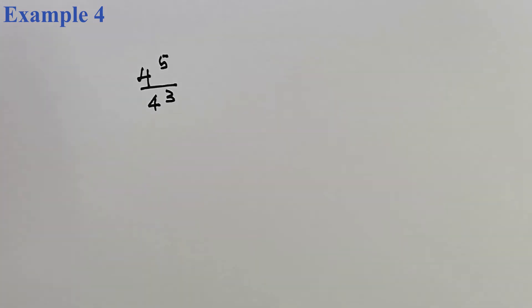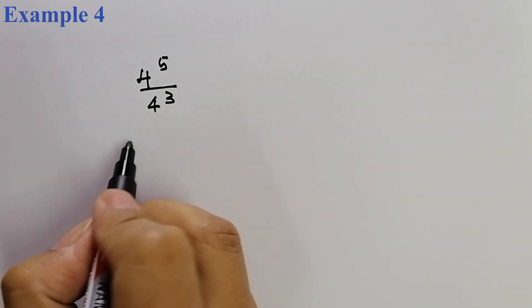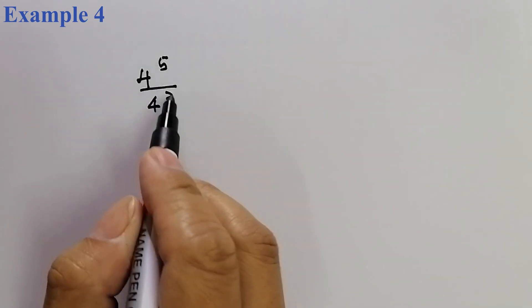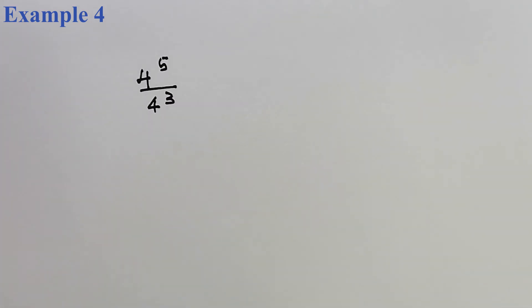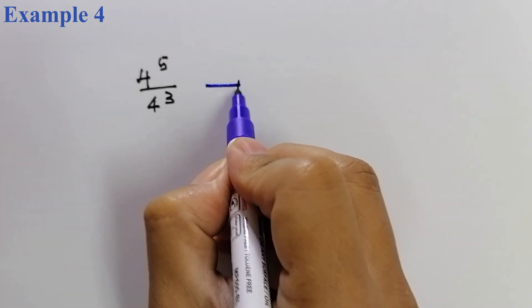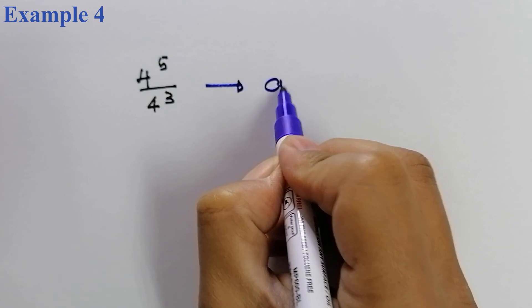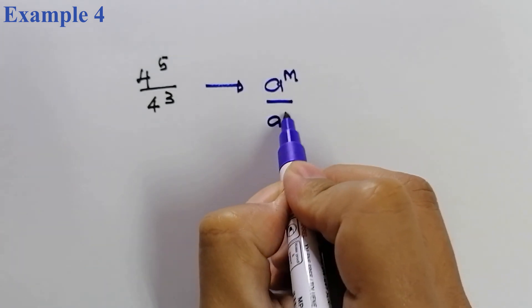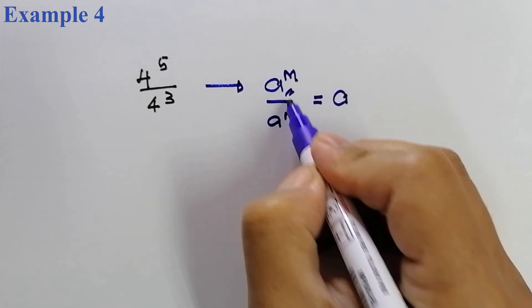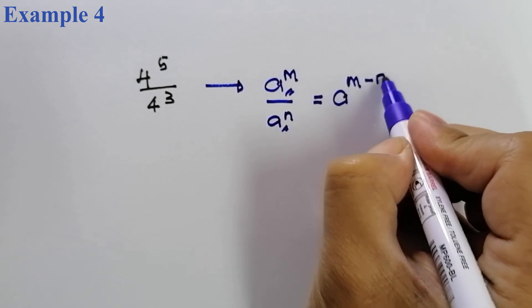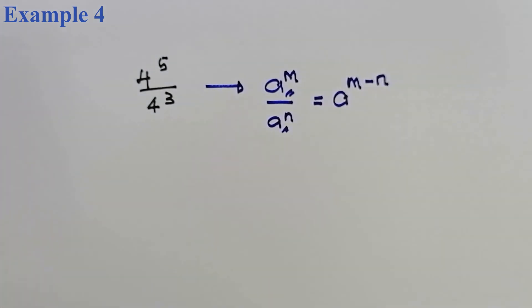So, soalan yang seterusnya adalah 4 power of 5 divided by 4 power of 3. Division bermaksud kita akan lakukan substraction ke atas power exponent dia. Kembali pada rumus. Rumus menunjukkan kalau A power of M divided by A power of N. So, power dia untuk division yang ini, kita akan lakukan dalam kes yang sama. M kena tolakkan dengan N.